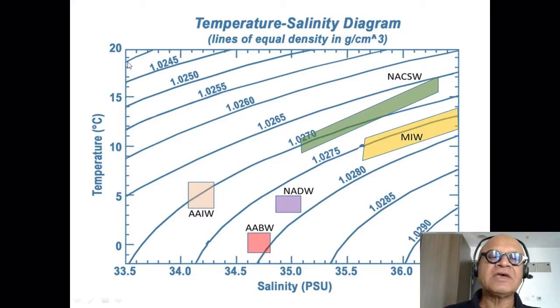The classic quantity that the physical oceanographers, especially those who go on a ship to the ocean and make measurements, is this T-S diagram, temperature salinity diagram. Sometimes it's shown with temperature on the abscissa and the salinity on the ordinate.